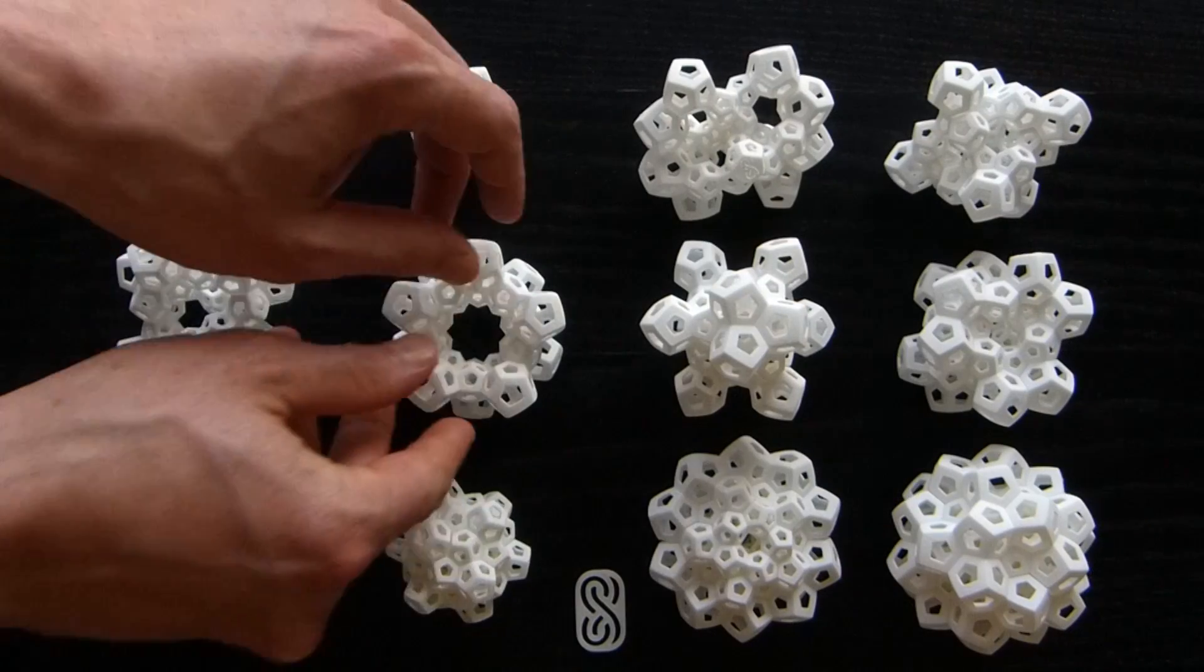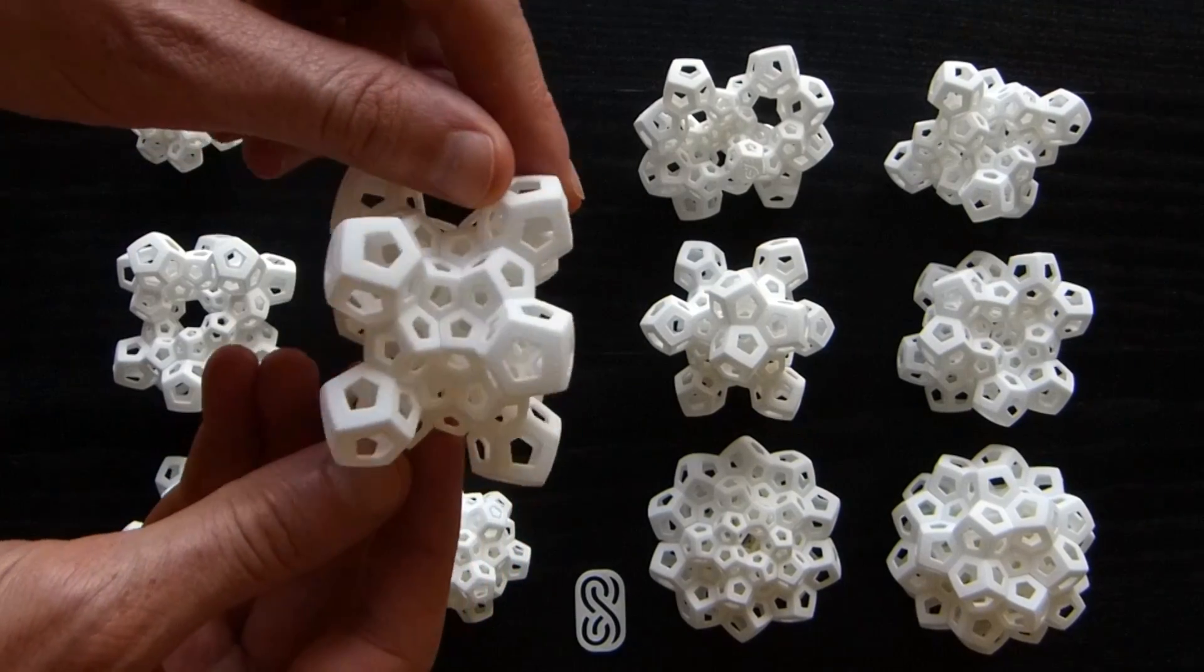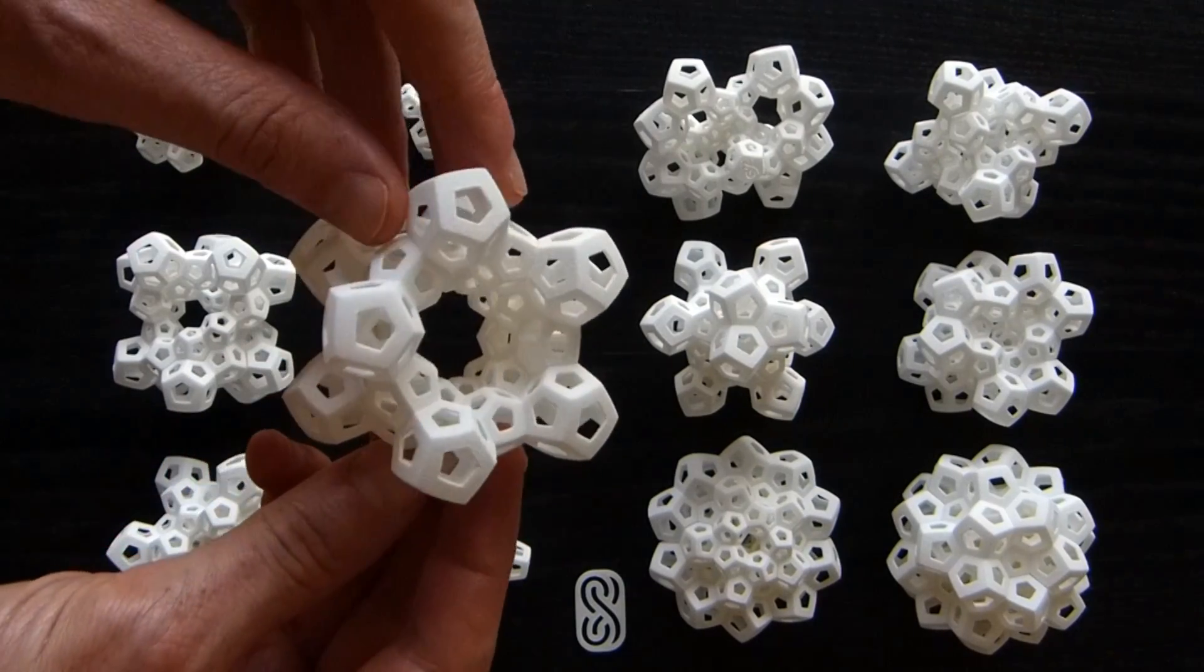As another example, this is the DC30 ring. We used to call this just the 30 cell puzzle. That was before we discovered all of these other puzzles.